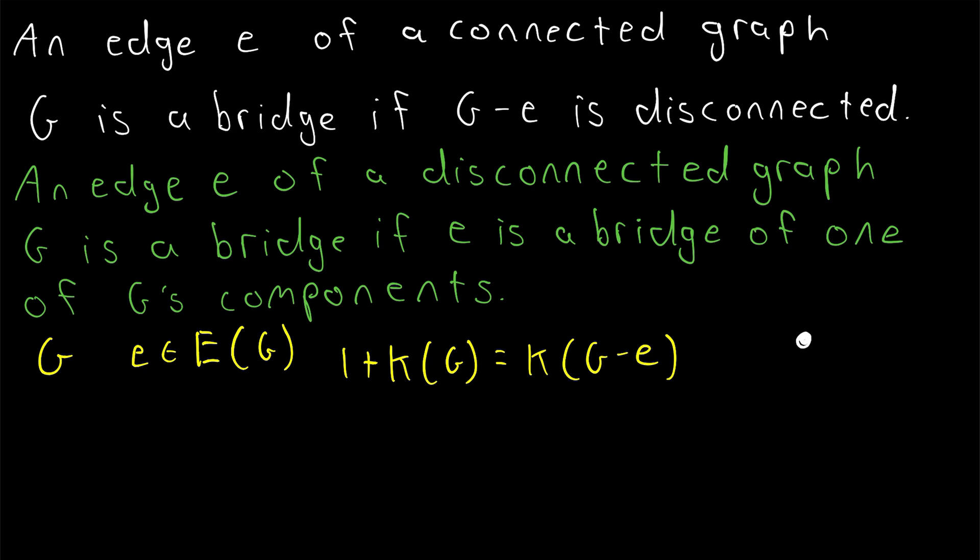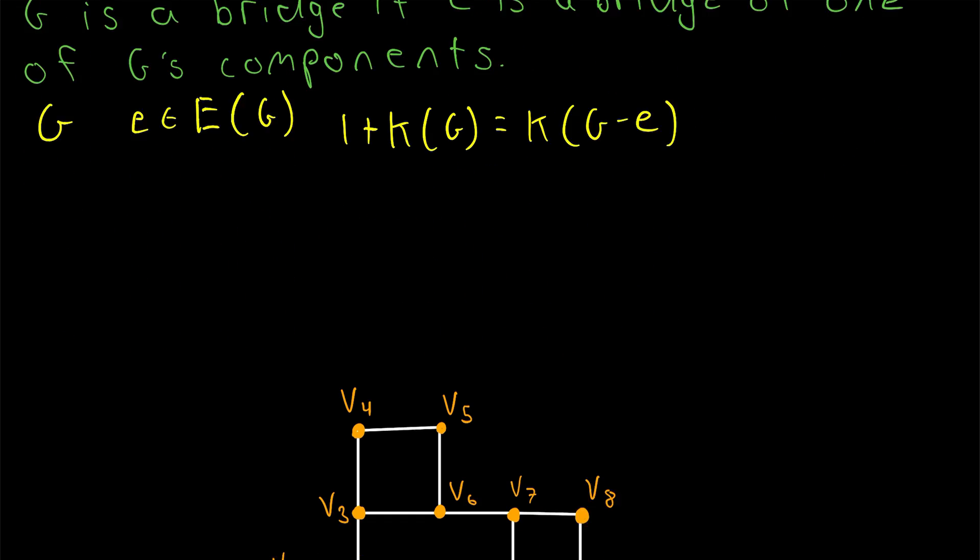Which you might notice is different from cut vertices. For example, it's possible that with a cut vertex, we could go from having one component and then delete that cut vertex and now all of a sudden have three components. Let me know if you'd like to see a lesson proving that result—that if a bridge is deleted from a graph, the resulting graph will have exactly one additional component. But we will not prove that in today's lesson.